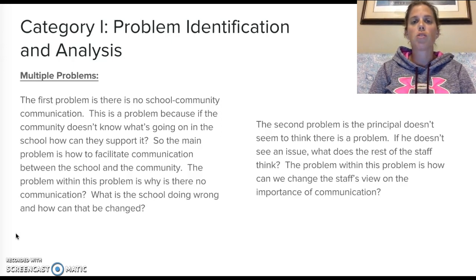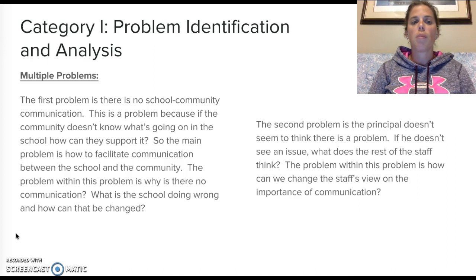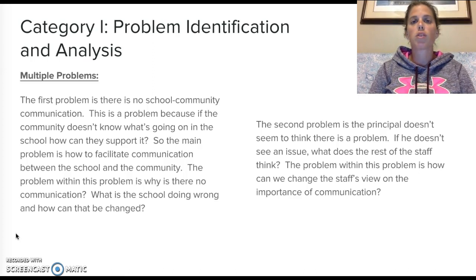First problem: there is no school-community communication. This is a problem because if the community doesn't know what's going on, how can they support it? The main problem is how to facilitate communication between the school and the community. The problem within this problem is: why is there no communication, what is the school doing wrong, and how can that be changed? Second problem: the principal doesn't seem to think there's a problem. If he doesn't see an issue, what does the rest of the staff think? The problem within this problem is how can we change the staff's view on the importance of communication?